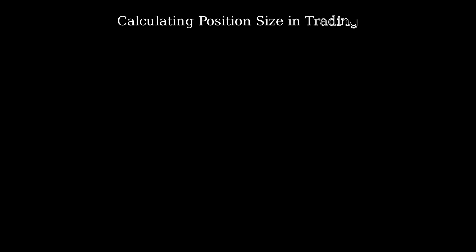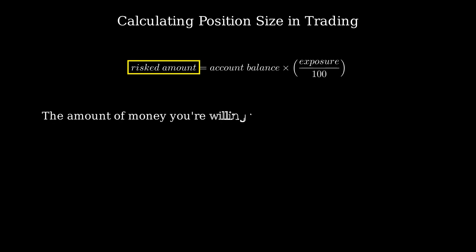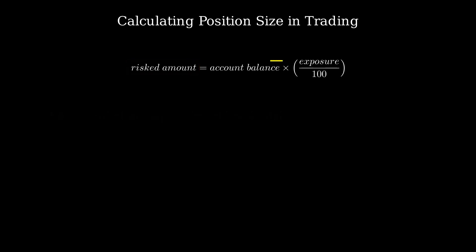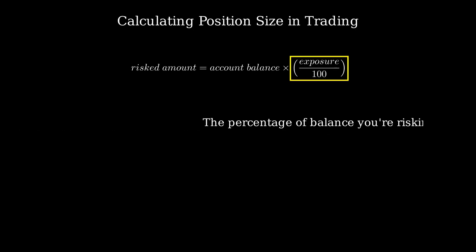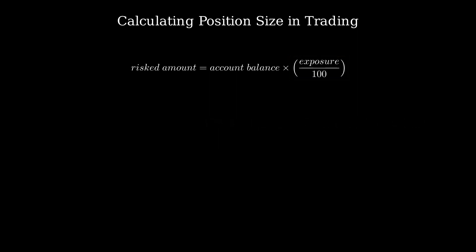Computing the size of this position is quite simple if you follow these steps. First, you compute the risk amount — that's the amount of money you're willing to risk. In our example, that was $200. This is equal to the total account balance you're trading with times the exposure, and the 2% rule tells you that this exposure should be at maximum 2, divided by 100 because we've considered it as a percent.